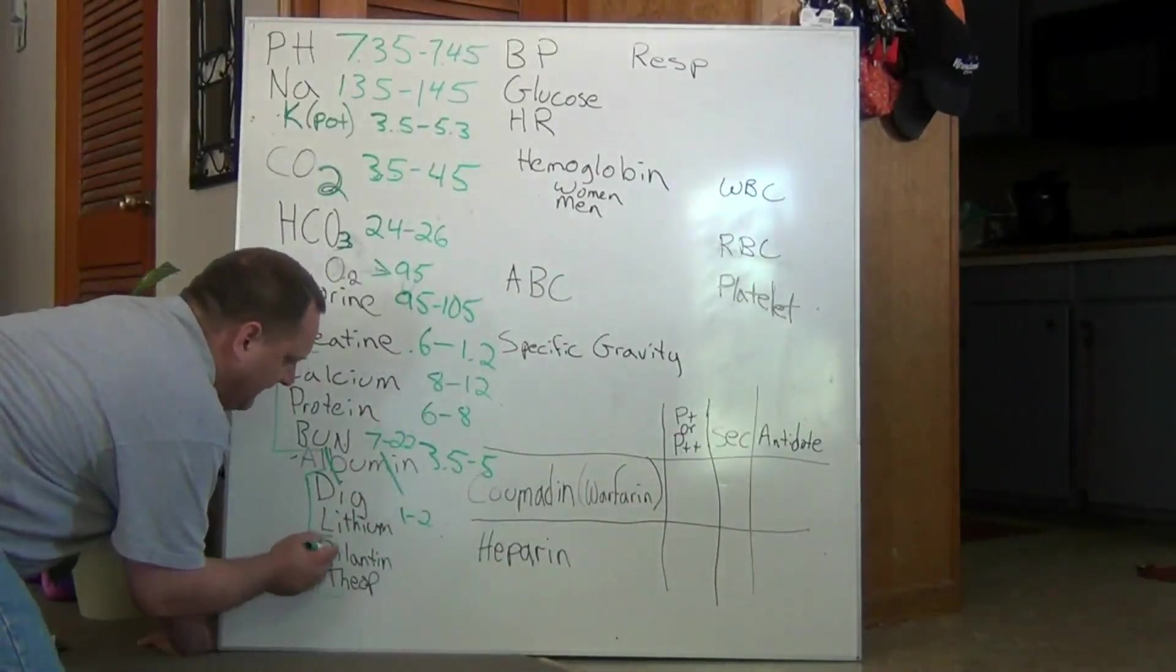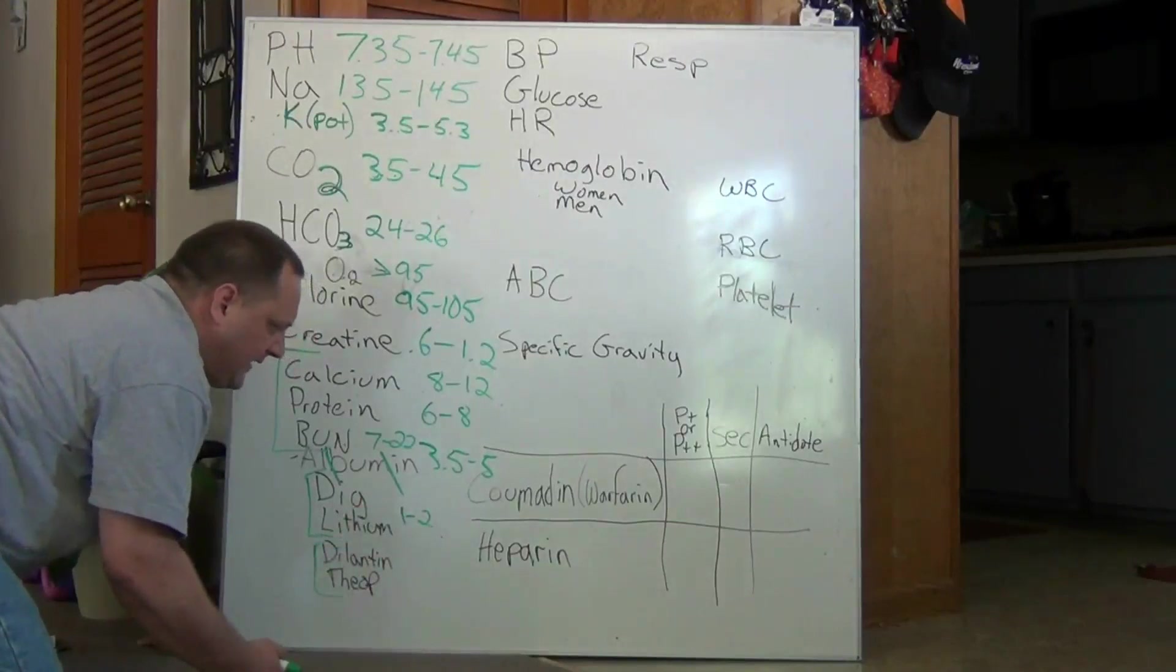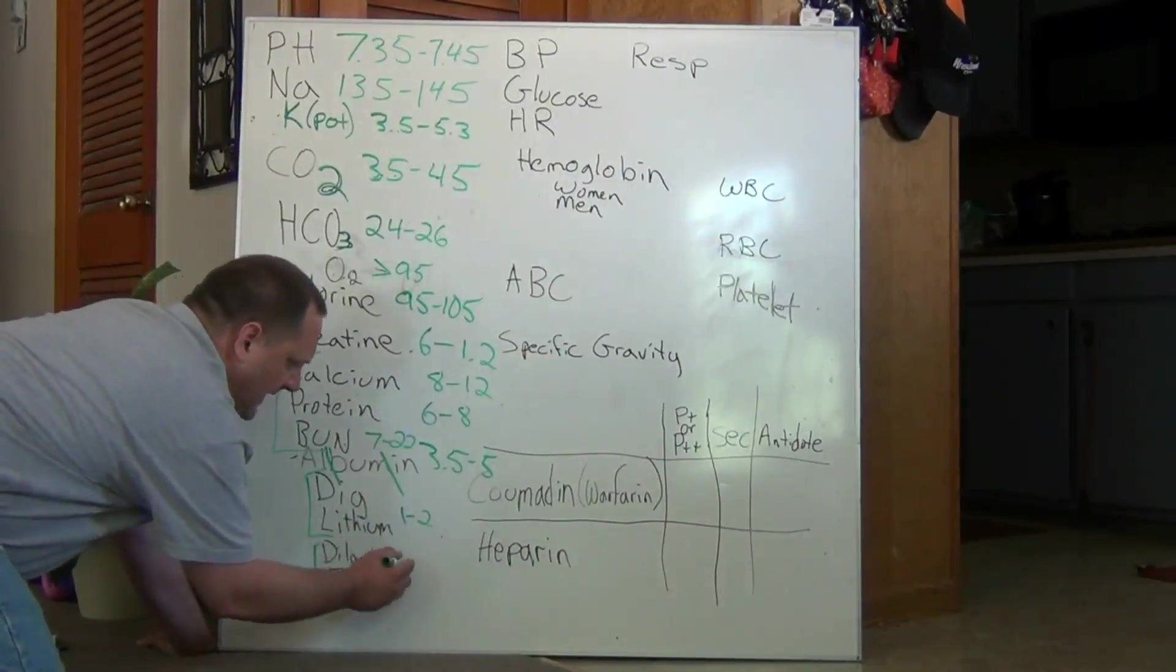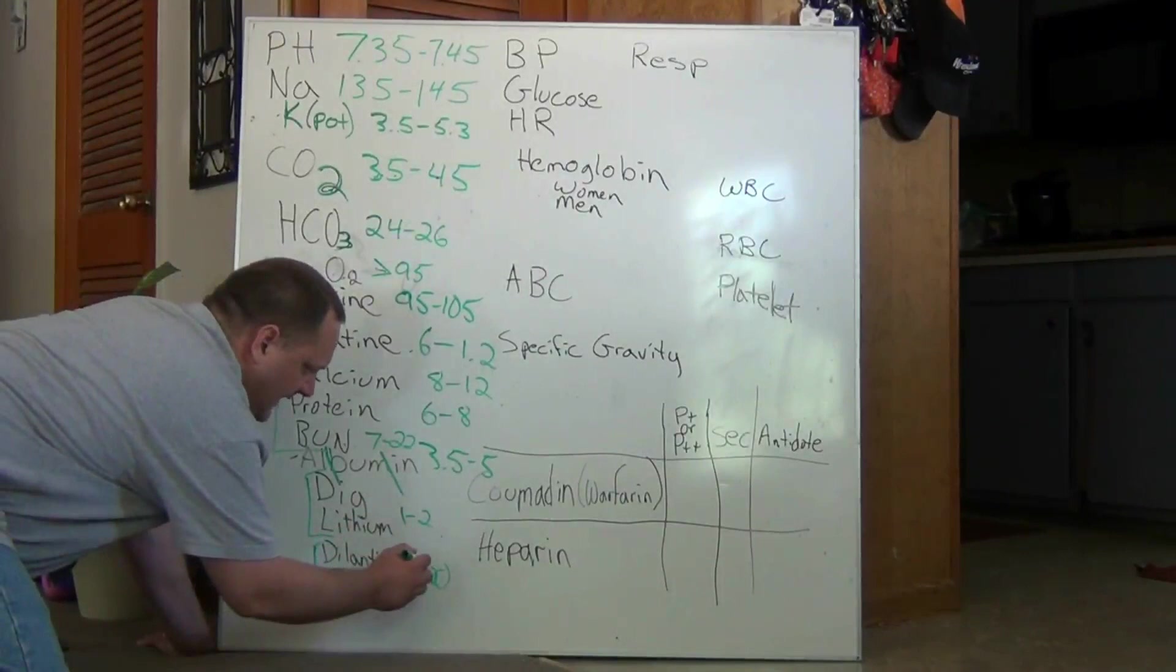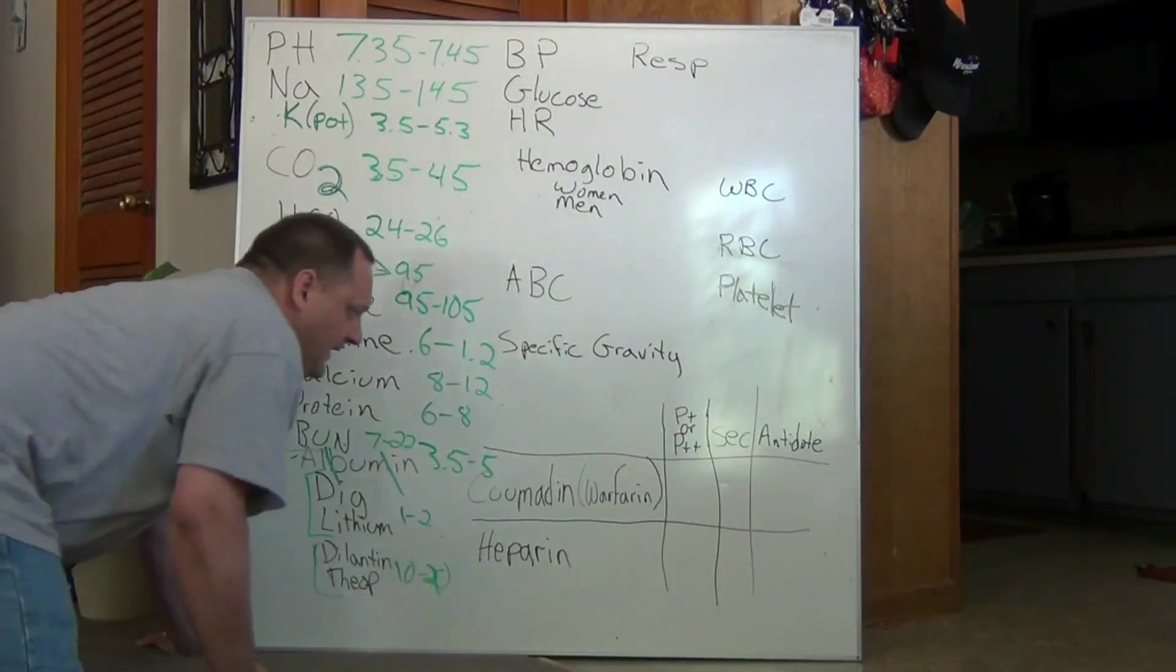Dilatin and theopaline, we multiply the 1 into 2 times 10, and we get 10 to 20. That's the typical value range for dilatin and theopaline.